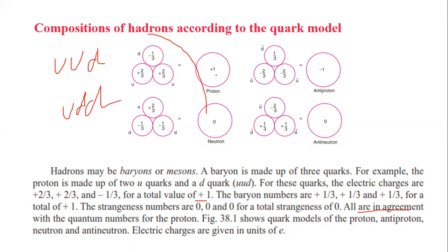The figure shows the quantum quark model of the proton, antiproton, neutron, and antineutron. The electric charge of the unit is e.